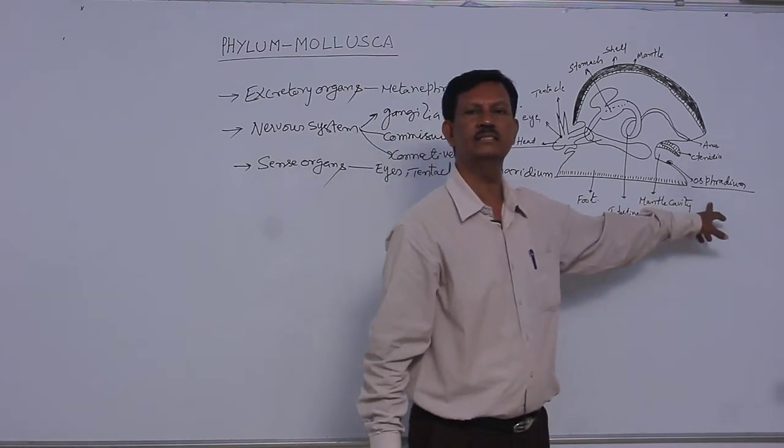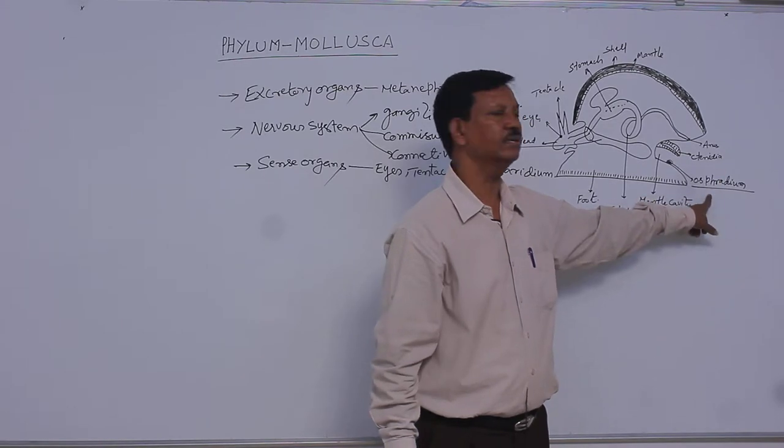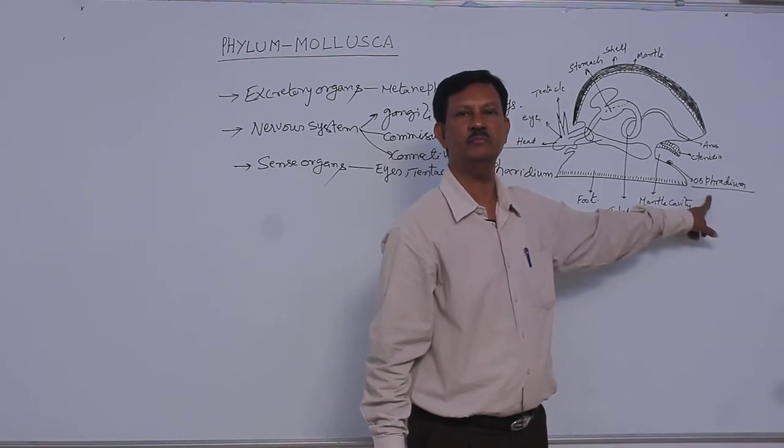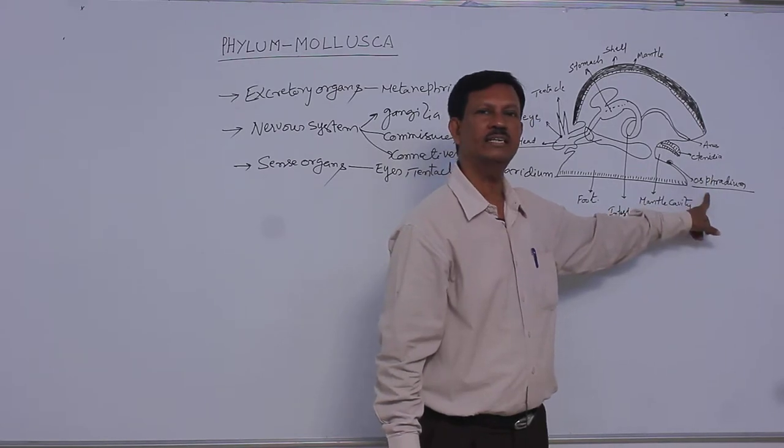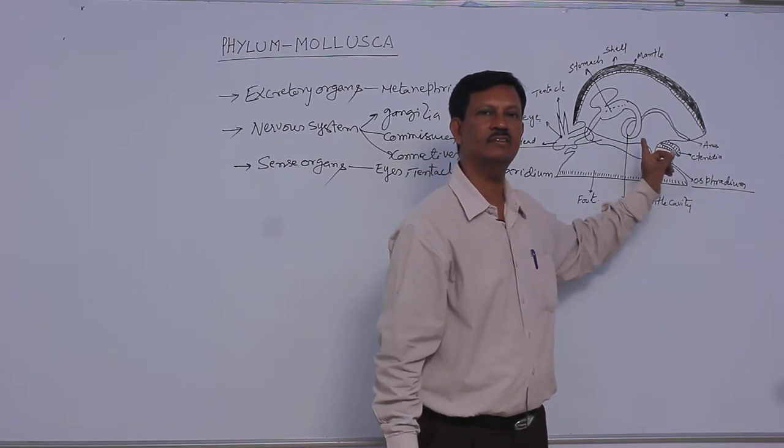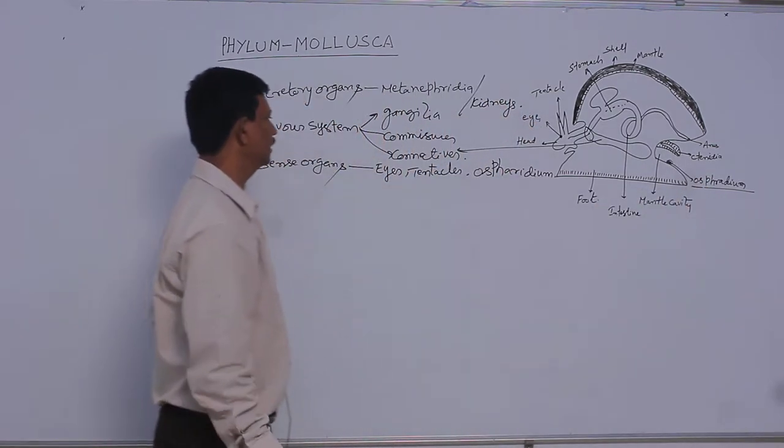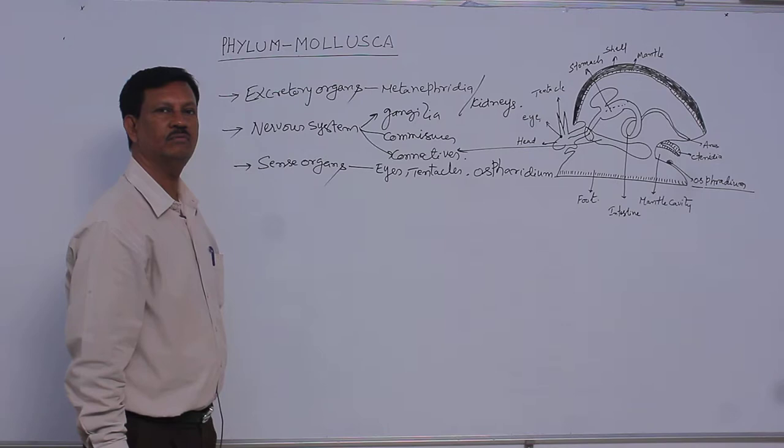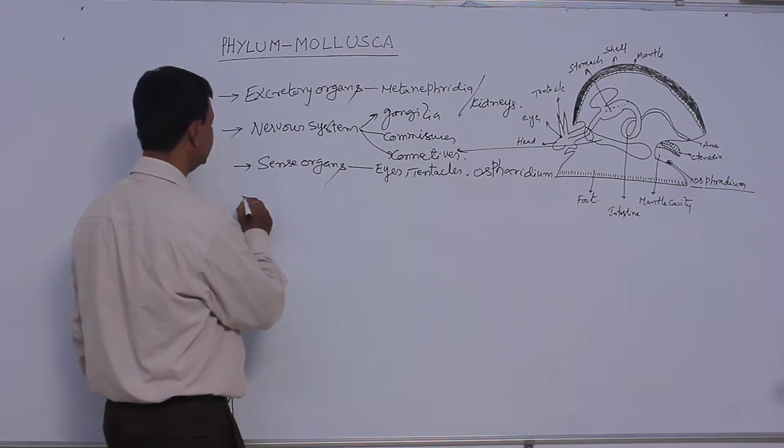This osperidium's main function is the purity of water. Water regularly enters into the body. It can recognize if it is pure water, it can allow inside the body, otherwise it does not allow the water inside. That is the function of the osperidium. These are the different types of eyes, tentacles, and osperidium present in this phylum.